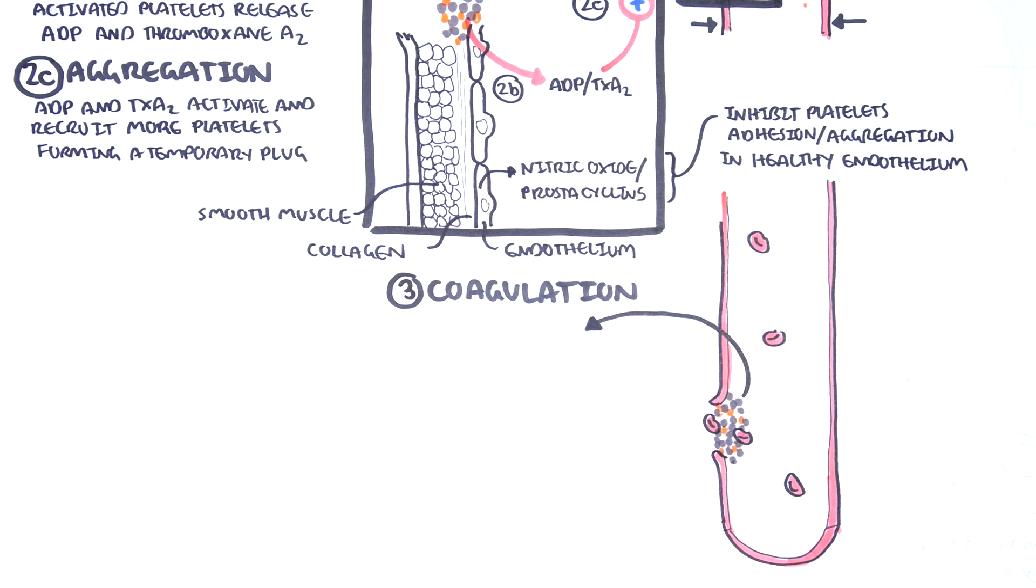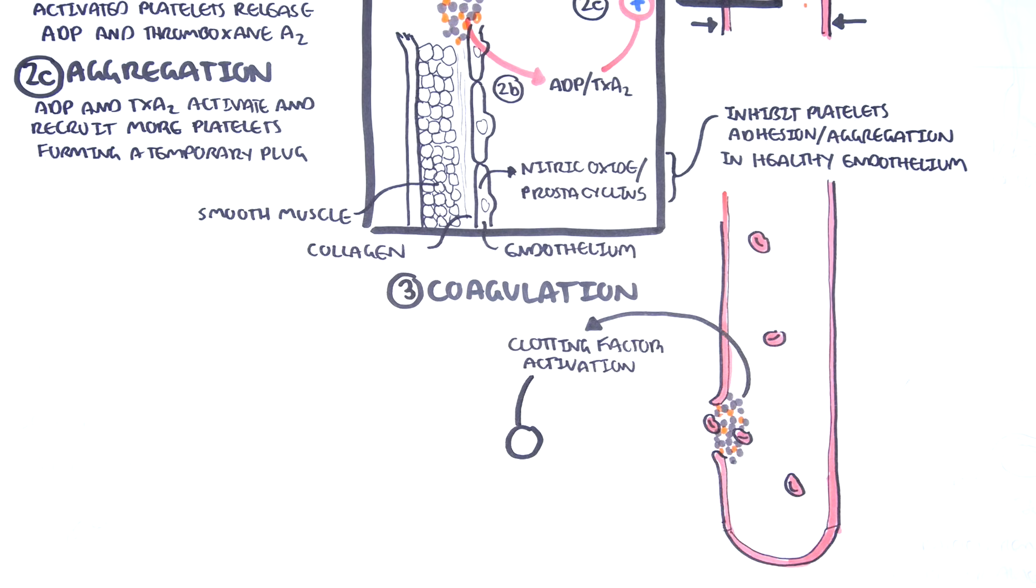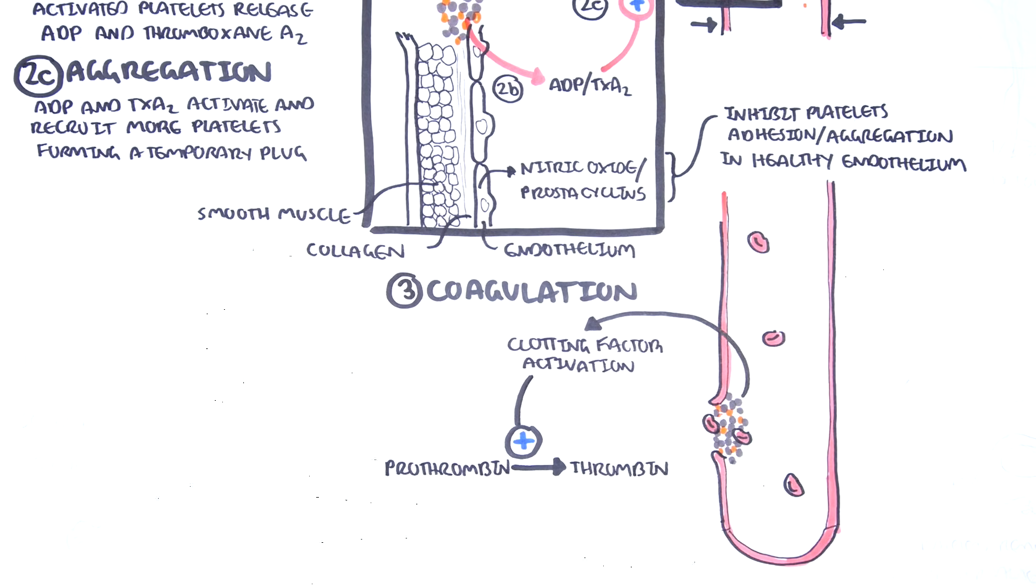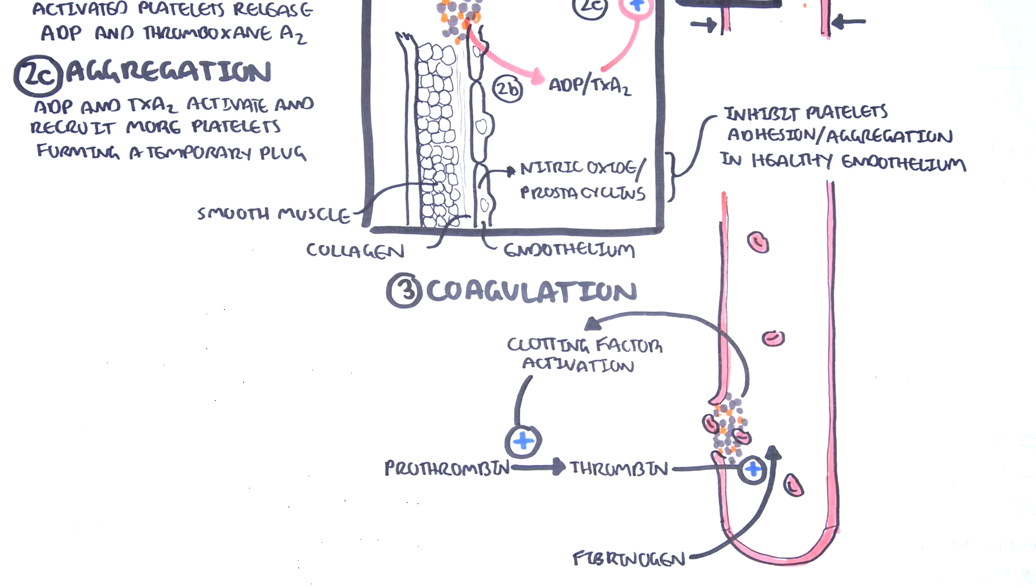Coagulation occurs when clotting factors become activated following a series of clotting cascades, which will eventually activate clotting factor II, known as prothrombin, to thrombin.